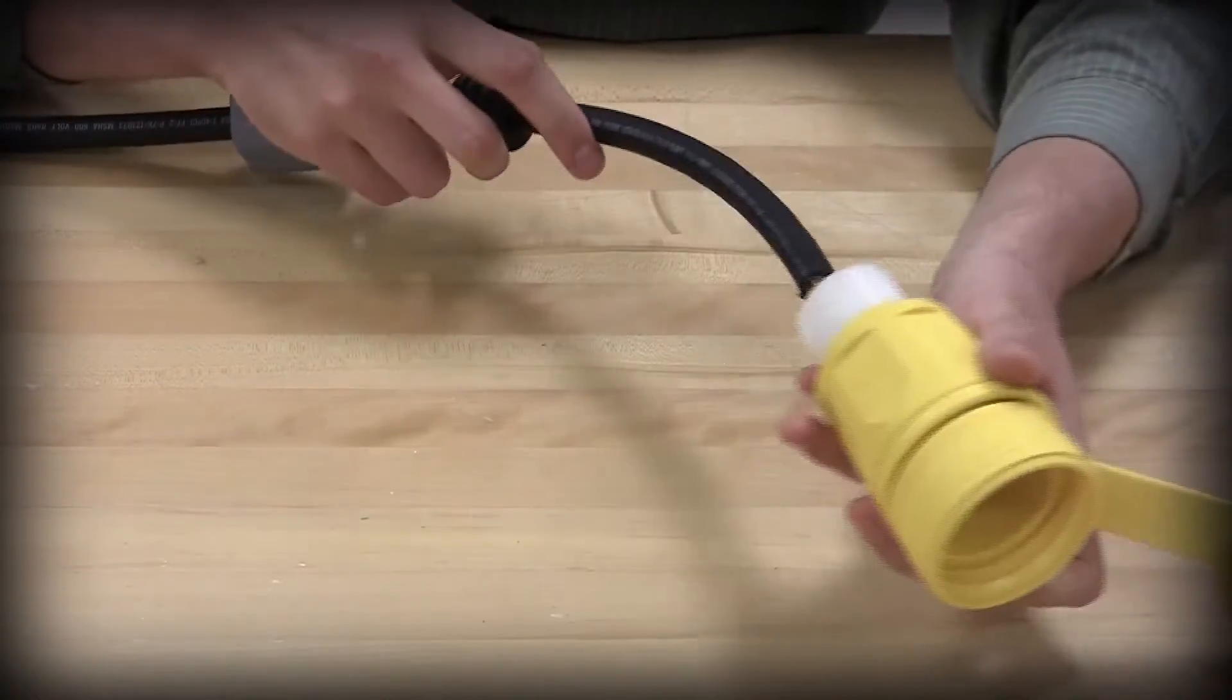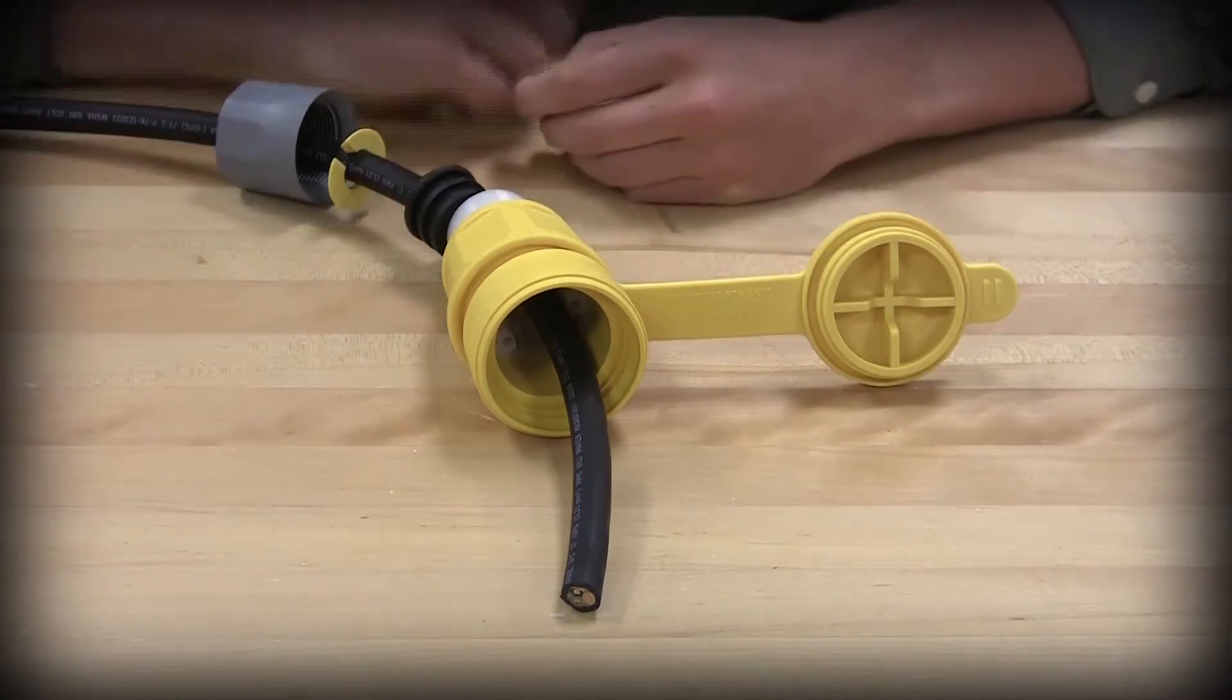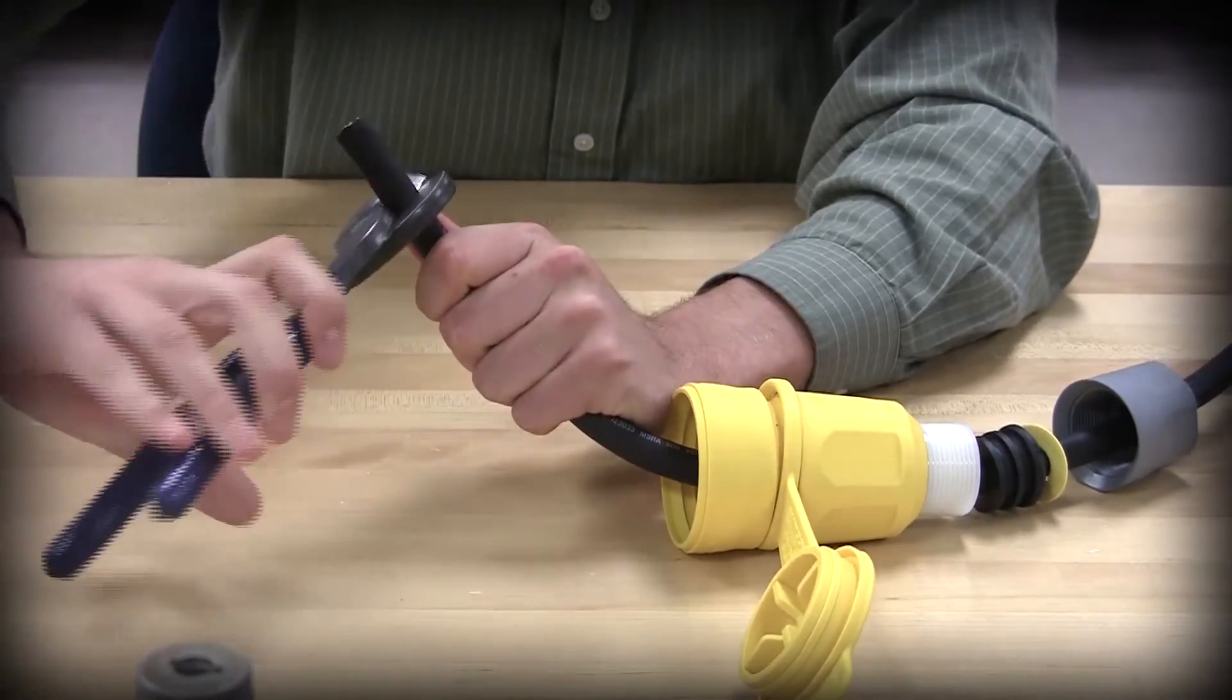Insert the cord into the threaded end of the rubber housing so that approximately 6 inches protrude from the front opening. Once the cord is properly inserted, strip the cord 1 and 1/4 inches.